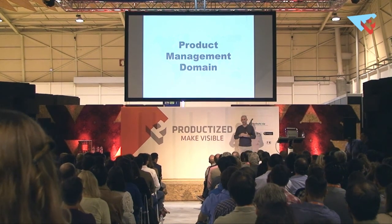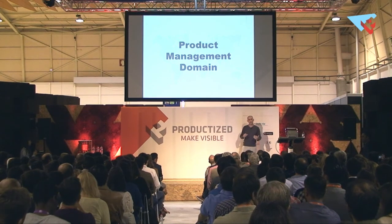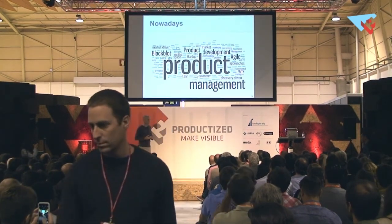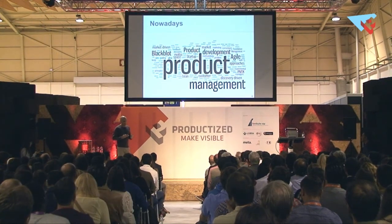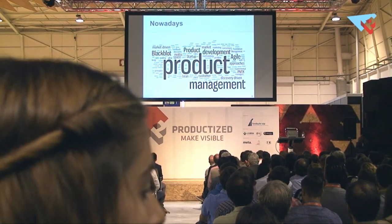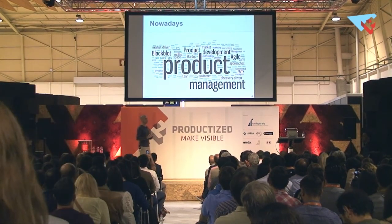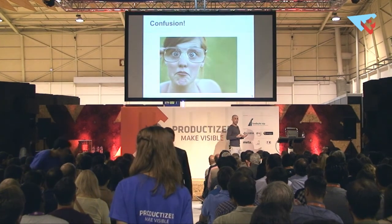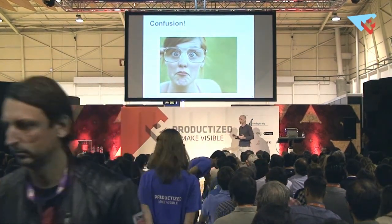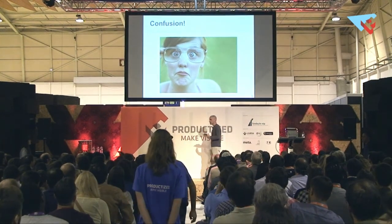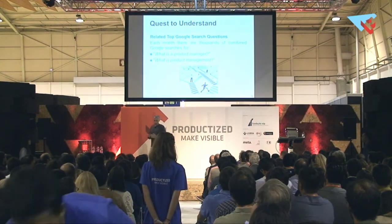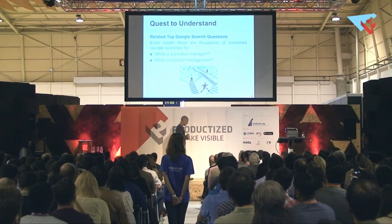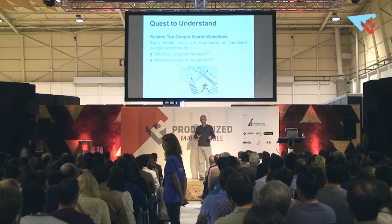In order to understand the differences between the product manager role and the product owner role, we first need to understand the underlying disciplines of product management and Agile Scrum from which these roles are derived. There's a lot of activity and interest in product management over the last couple of years — blogs, LinkedIn groups, books — and all this activity has created massive digital information on product management, but it's also created confusion. People don't understand what product management is, how to define it, or where it belongs within the organization.